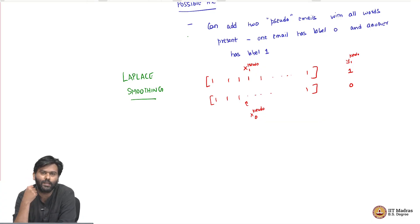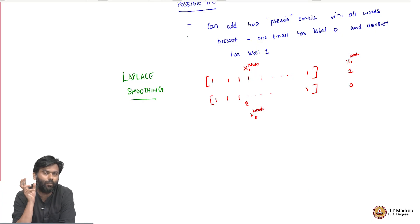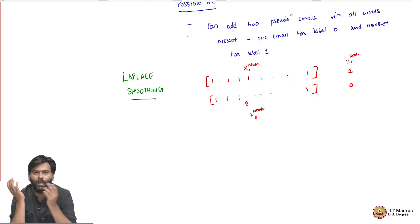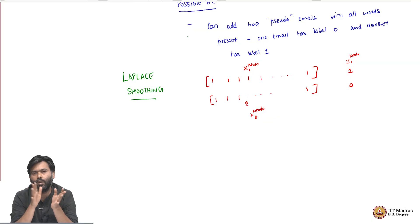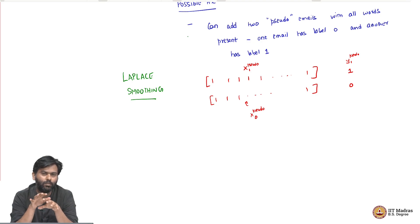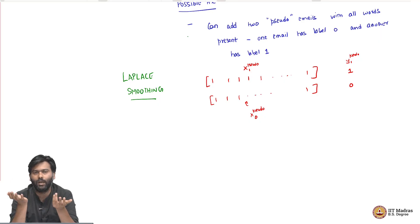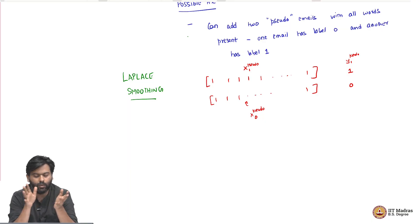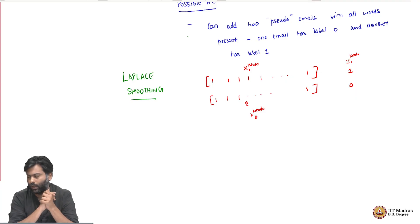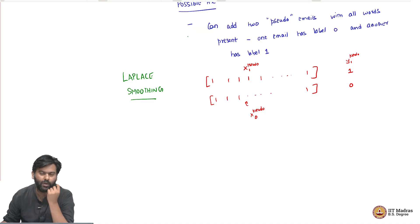You can also think of Laplace smoothing as introducing a kind of Bayesian estimate — adding a prior where someone tells you: here is an email with all words and label 0, and here is one with all words and label 1. So you are not going to immediately dismiss any word with probability 0. There is always going to be some chance, coming from this prior knowledge. You can think of it as a Bayesian prior or simply as adding two pseudo emails into the training mix and doing maximum likelihood — both are equivalent. This is one pitfall to watch out for.